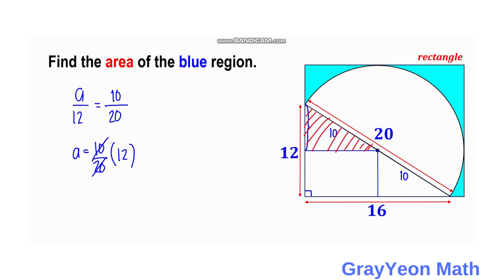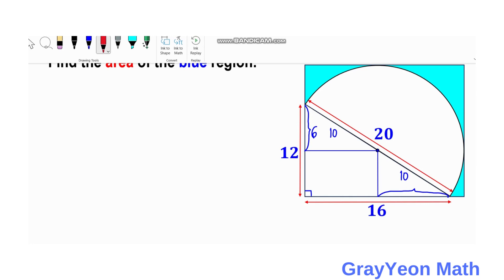This is one-half, and 12 over 2 equals 6. Next we get this length, and we compare this smaller right triangle with the biggest one.